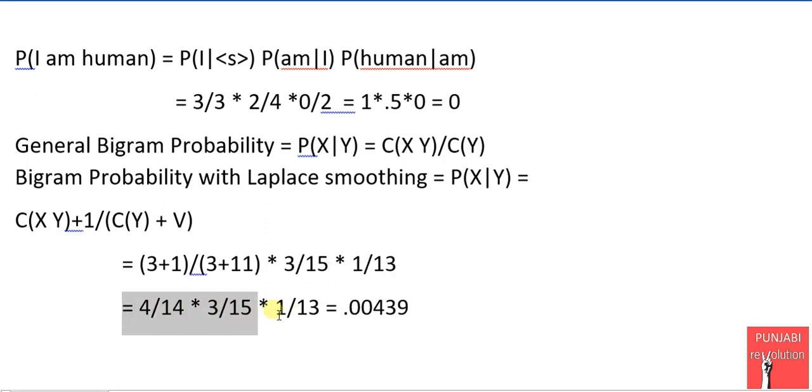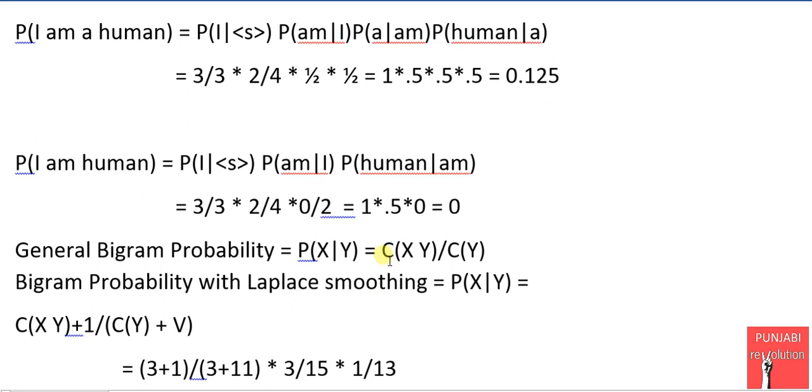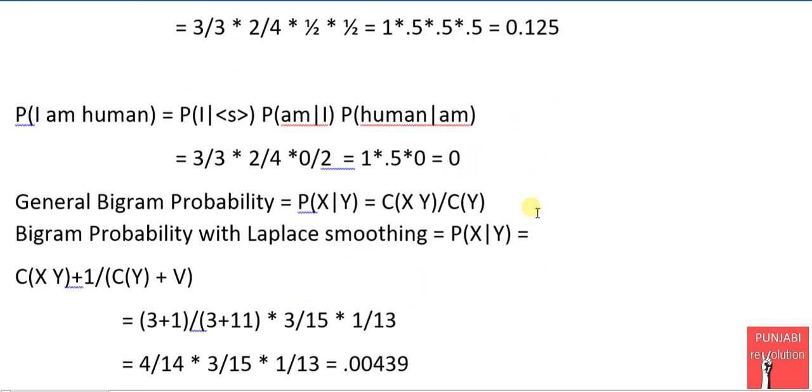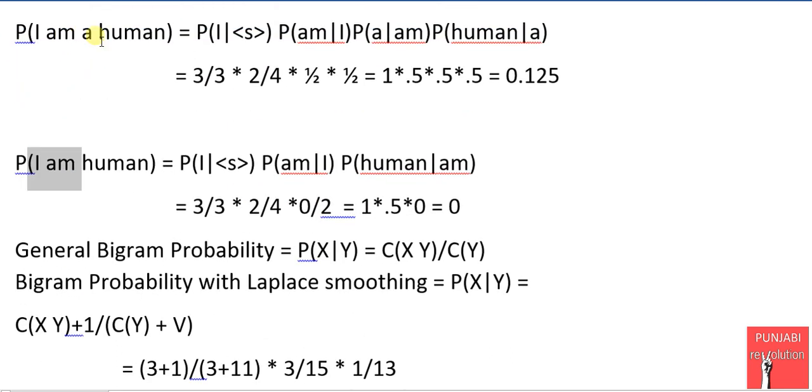So we compute this and we get the output as 0.00439. Although 0.00439 is less than 0.125 but it is still not 0 because 0 doesn't make any sense for such a sentence which is very similar to this sentence.